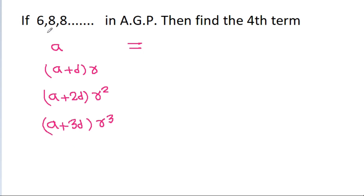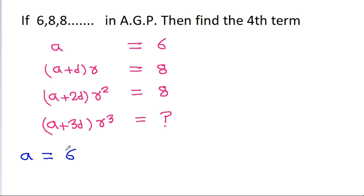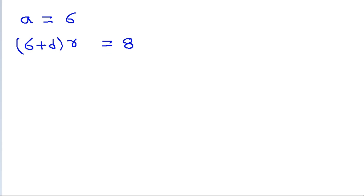The first term is 6, the second term is 8, and the third term is also 8, and we have to find the value of the fourth term. So we have A = 6, and (A + D)·R = 8, which gives 6 + D·R = 8 as equation 1. Also, (A + 2D)·R² = 8, giving 6 + 2D·R² = 8 as equation 2.